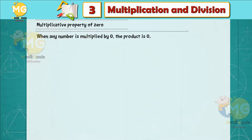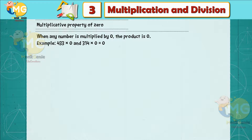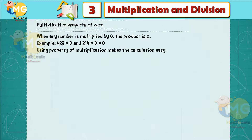Multiplicative property of zero: when any number is multiplied by 0, the product is 0. For example, 433 × 0 = 0 and 314 × 0 = 0.